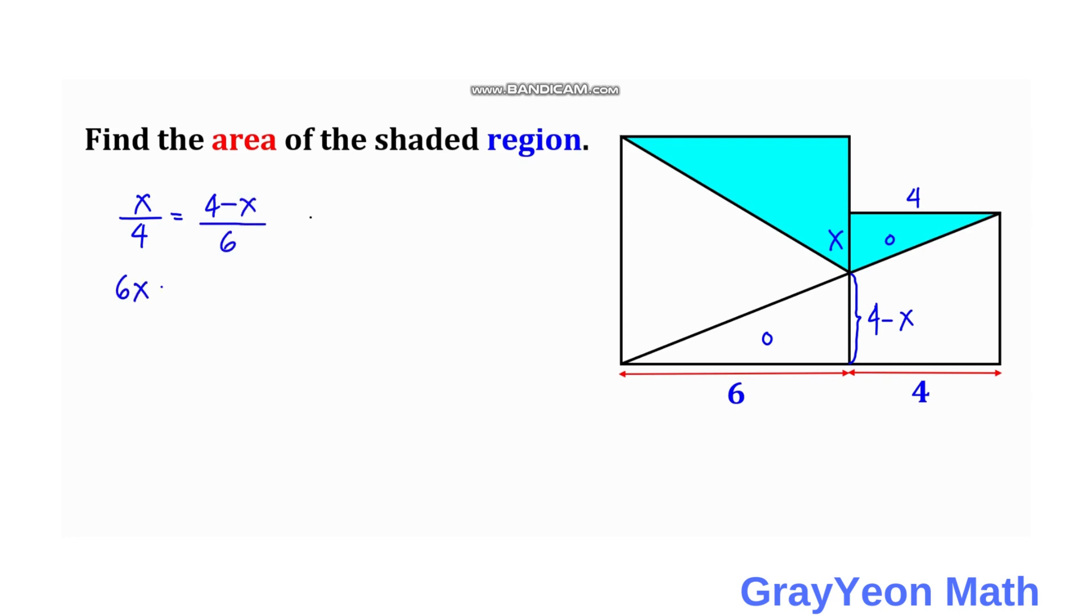So we have 6x is equal to 4 times 4 minus x. Then we have 6x is equal to 16 minus 4x. If we put this negative 4x to the left hand side it becomes 10x, and this becomes 16. So if we divide both sides by 10, we have x is equal to 16 over 10. We divide by 5, so we have x is equal to 8 over 5 units.